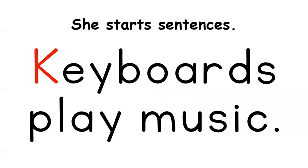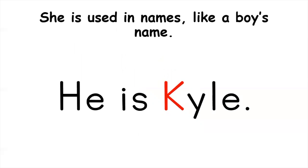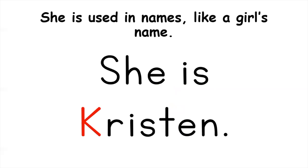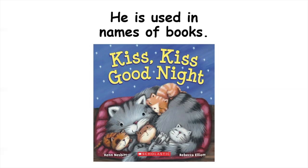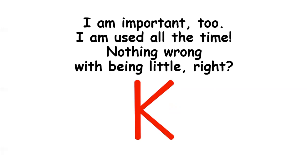She starts sentences. Keyboards play music. She is used in names like a boy's name — he is Kyle. She is used in names like a girl's name — she is Kristen. He is used in names of places — he is in Korea. He is used in names of books — Kiss Kiss Goodnight.